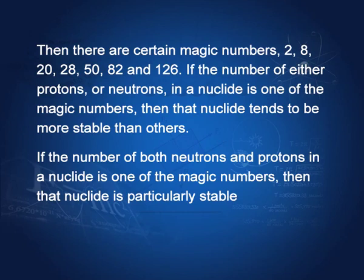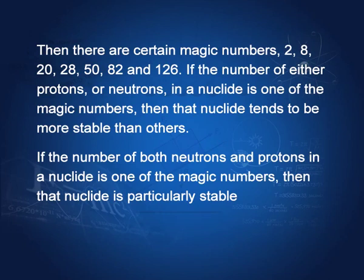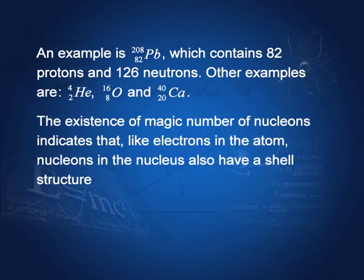There are certain magic numbers: 2, 8, 20, 28, 50, 82, and 126. If the number of nucleons in the nucleus equals one of these numbers, or if both the number of protons and the number of neutrons equal one of these magic numbers, then the nucleus is extra stable. An example is Pb-208, which contains 82 protons and 126 neutrons — both are magic numbers.